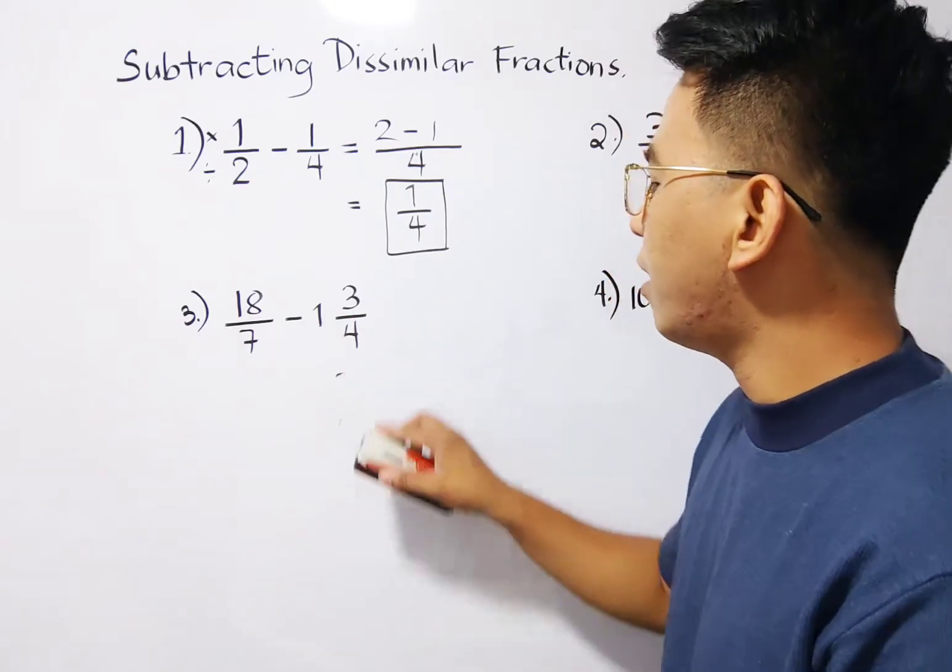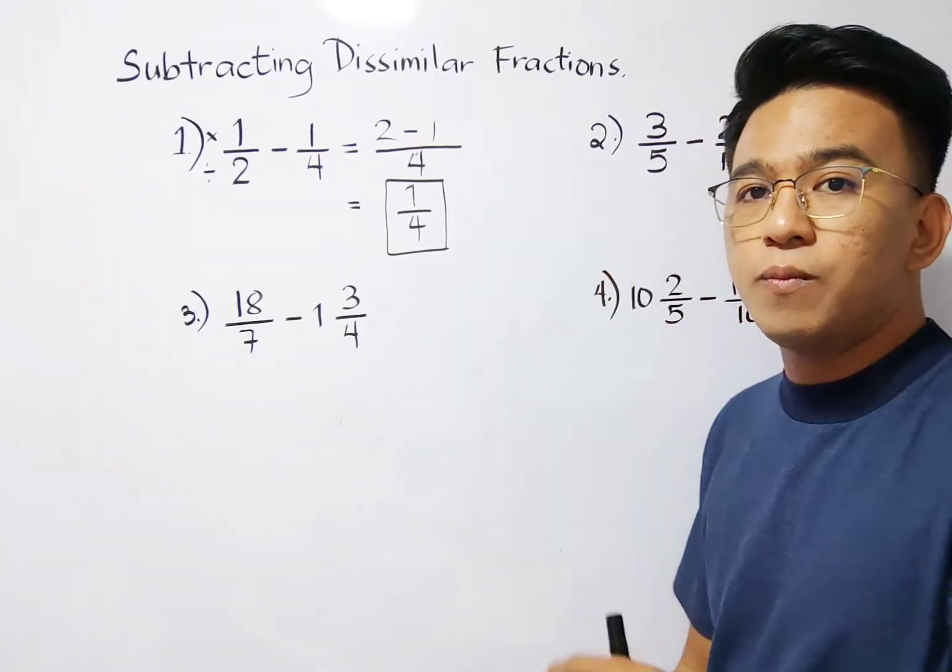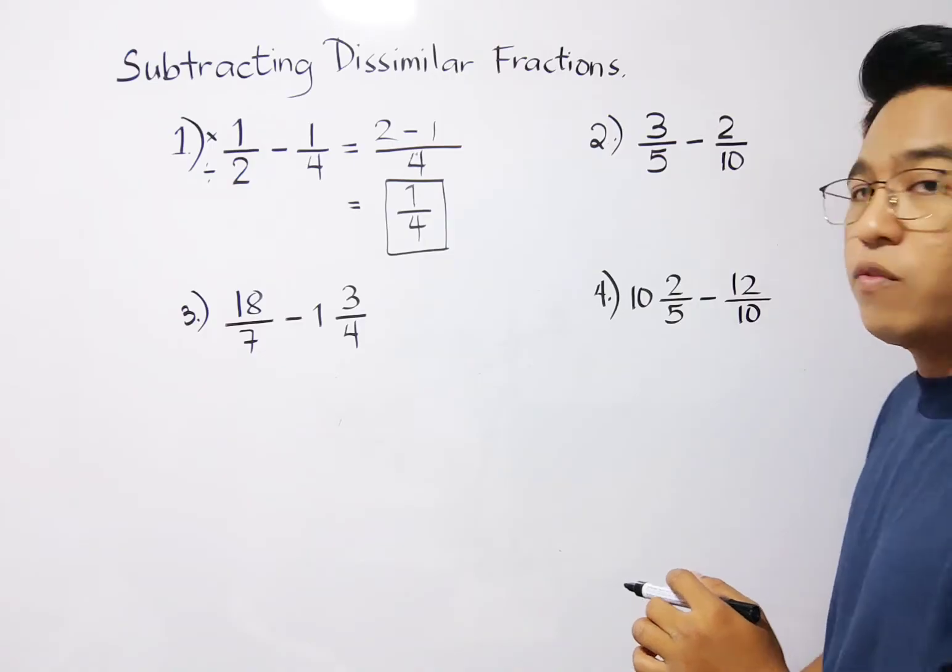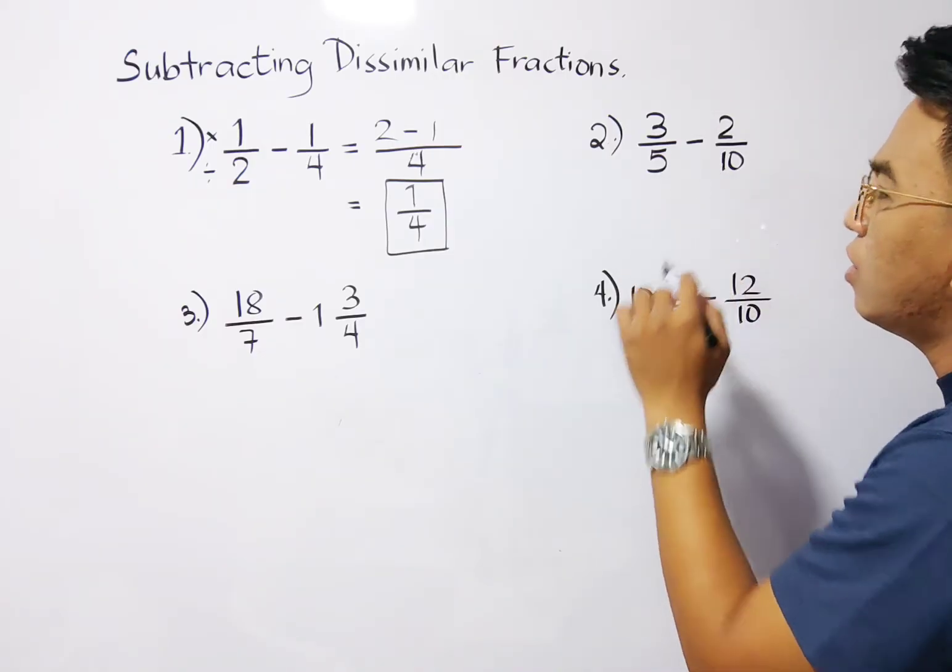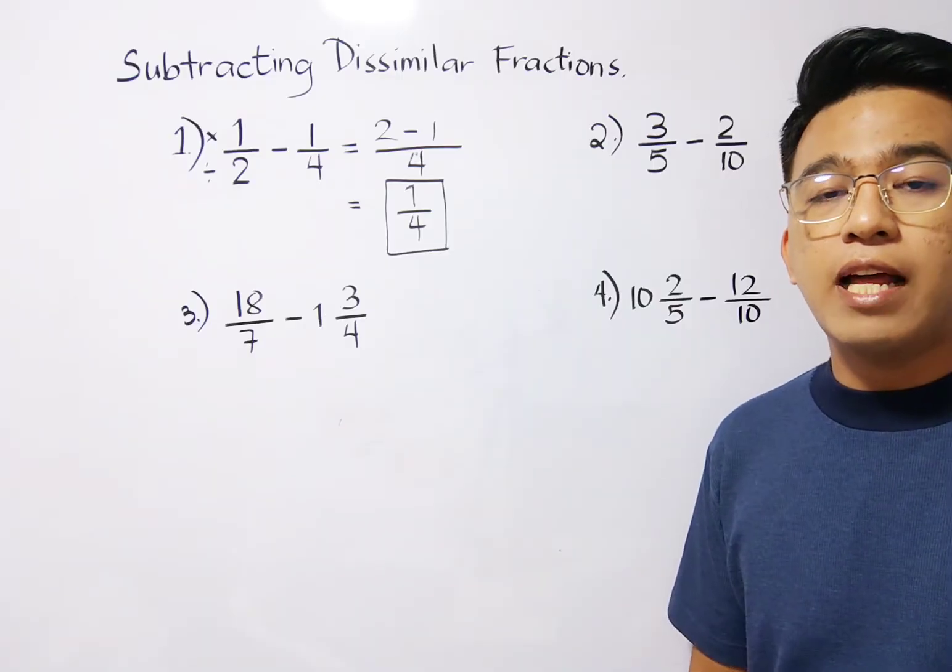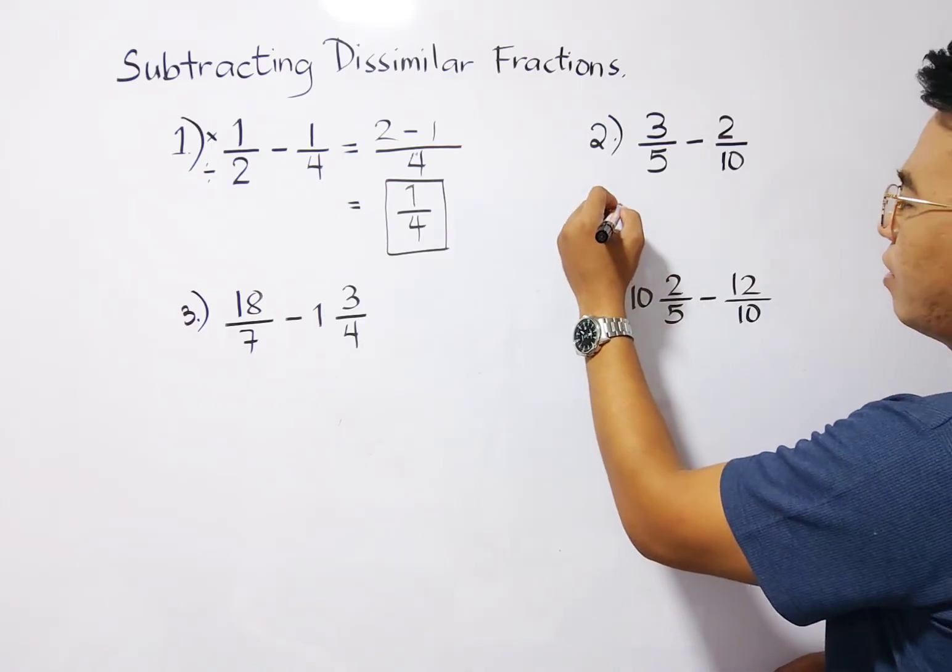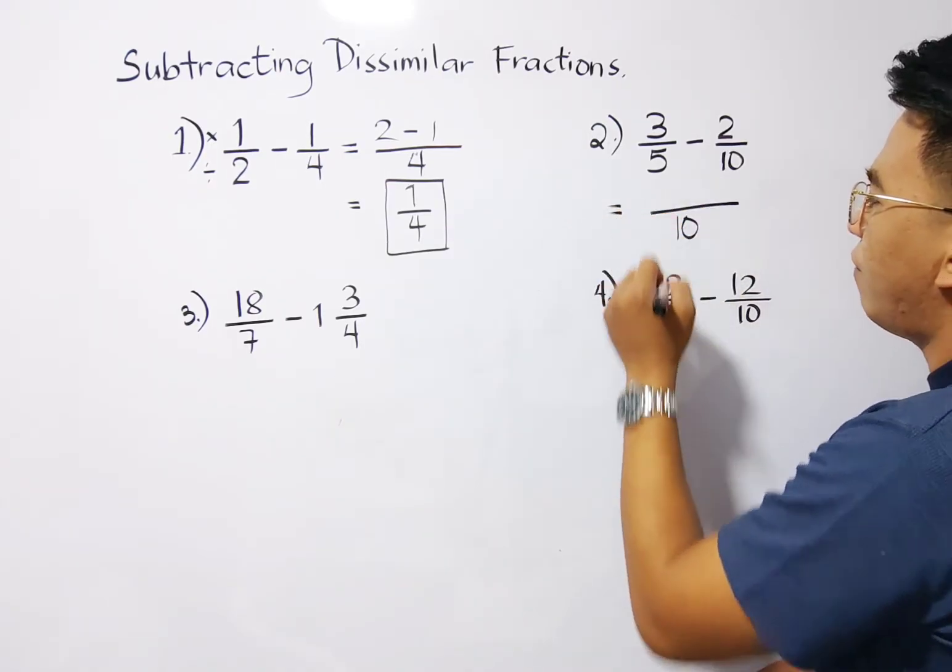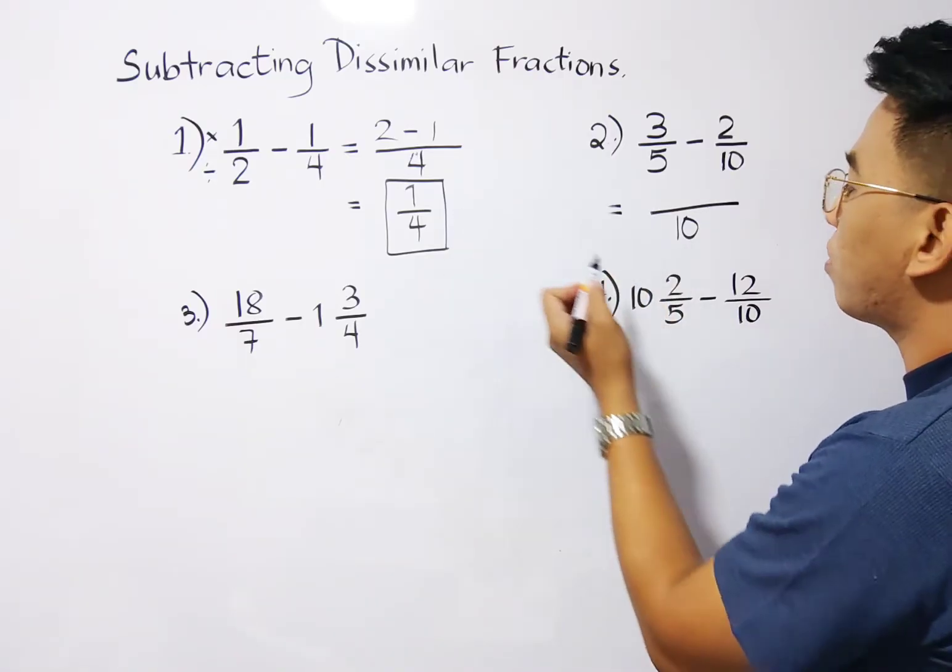Now let's move on with item number 3. For number 3, oh sorry, we have here number 2. For number 2, we have 3 over 5 minus 2 over 10. So as you can see, the numbers here are 5 and 10. So we can say that the least common denominator of 5 and 10 is simply 10. So we have here our LCD, which is 10.